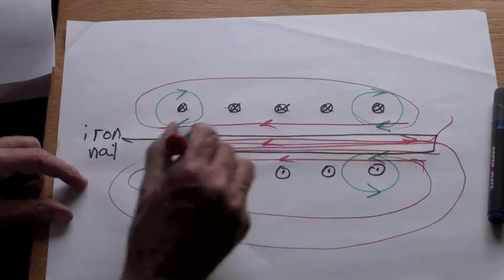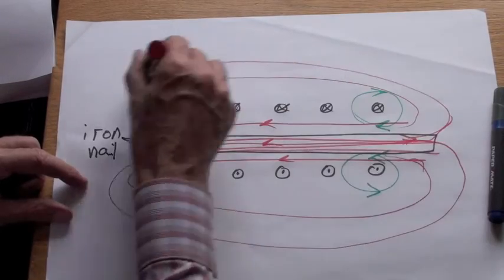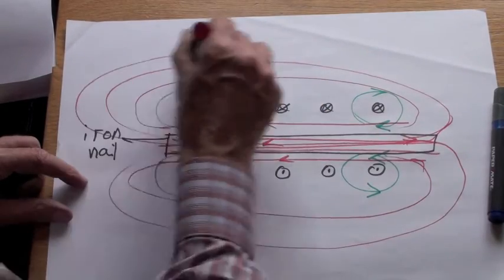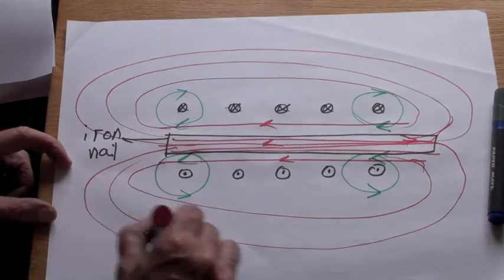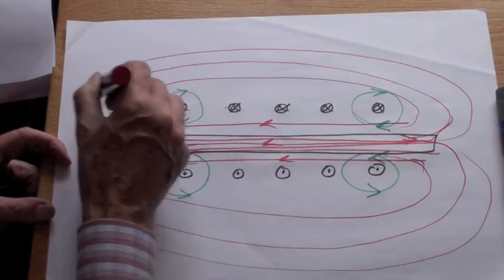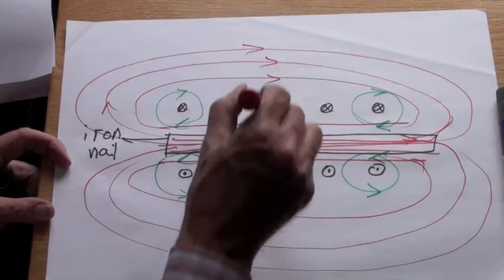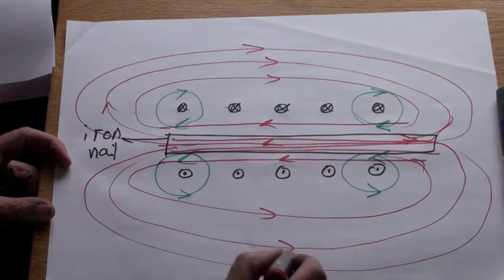That is because the iron nail has much greater magnetic permeability than free space. It is much easier for the magnetic field to form in the iron, so the total field is much stronger.